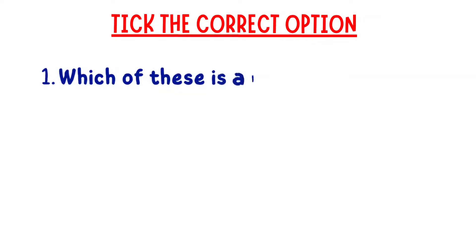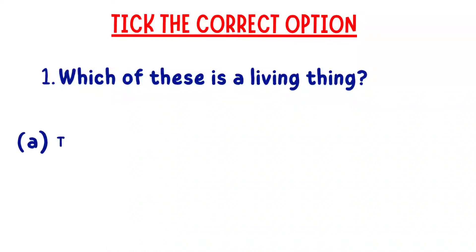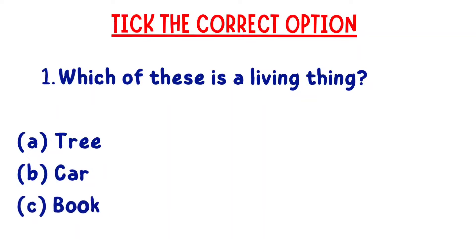Check the correct option. Which of these is a living thing? A: tree, B: car, C: hook. The right answer is tree.